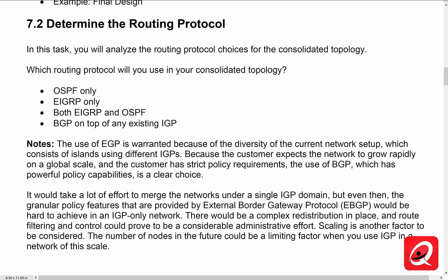Step number one: determine the routing protocol. We're analyzing the routing protocol choices — OSPF, EIGRP, EIGRP and OSPF, or BGP on top of an IGP. The use of an exterior gateway protocol is definitely warranted because of all the requirements, even just the internet connectivity requirements. A site failing over to another or having a multi-homed connection at the headquarters site is definitely conducive to running BGP. We have all these different islands of IGP running — EIGRP on the European and Asian sites and OSPF on the headquarters sites. But we do expect the network to grow, it is a global network, and we have very strict policy requirements for routing. The use of BGP is clearly the best choice in this particular case.